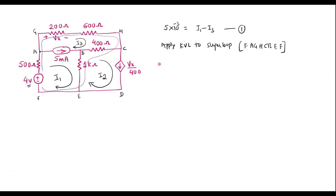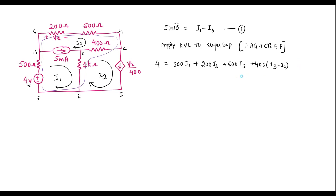I will start from the 4 volt source. I can write: 4 = voltage across 500 ohm, which is 500·I1, plus current through 200 ohm is I3, so 200·I3, then 600·I3 through the 600 ohm resistor. Then through the 400 ohm resistor, both I3 and I2 flow — since I3 flows C to B and I2 flows B to C, it is 400·(I3 − I2). Then through the 1k ohm resistor: 1k·(I1 − I2).